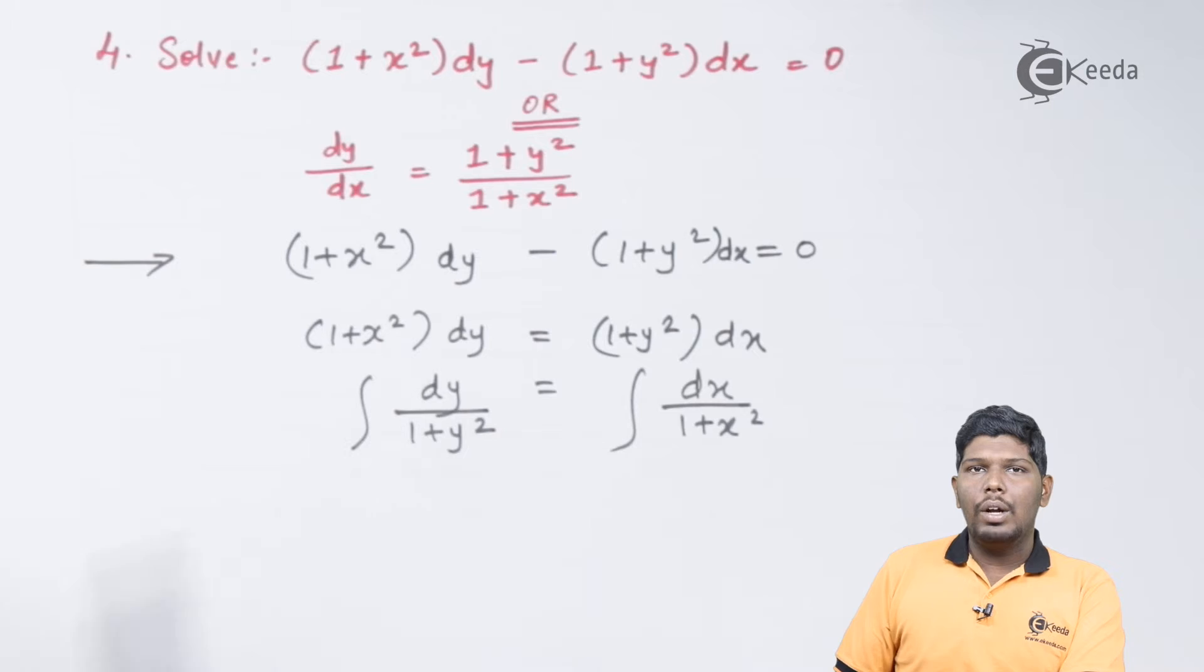As we know, integral of 1/(1 + y²) will give you tan⁻¹(y). On the right hand side, integral of 1/(1 + x²) will give you tan⁻¹(x).